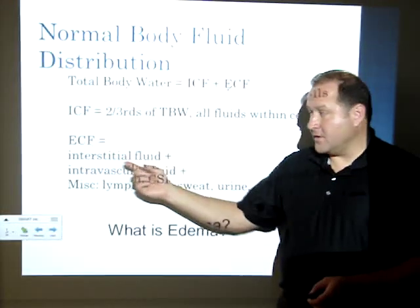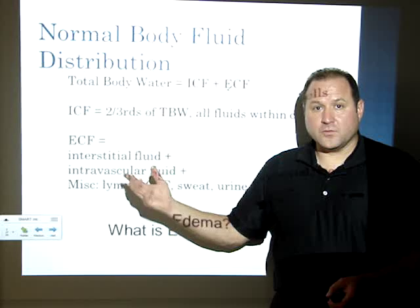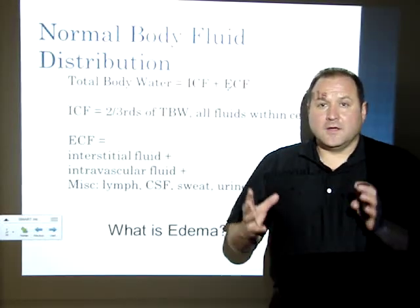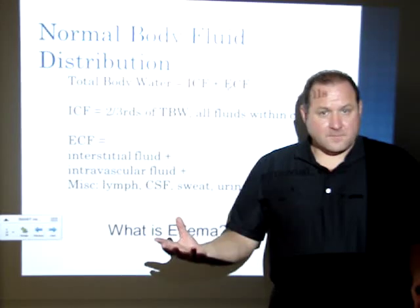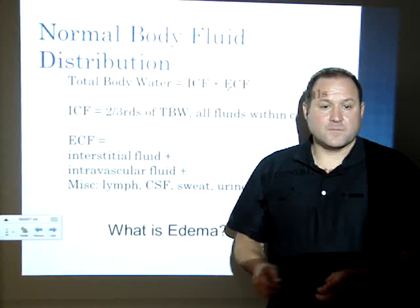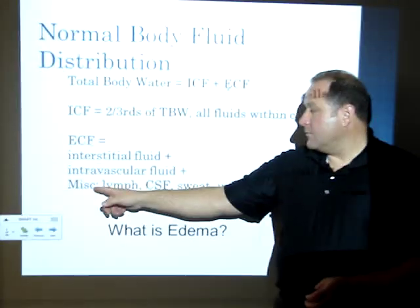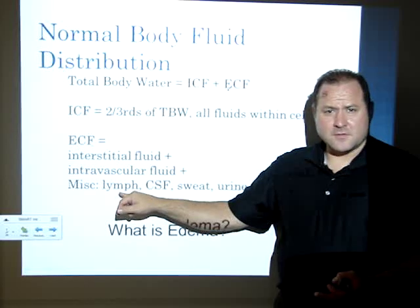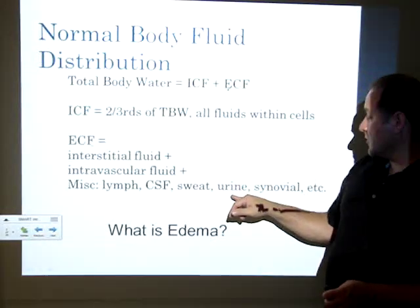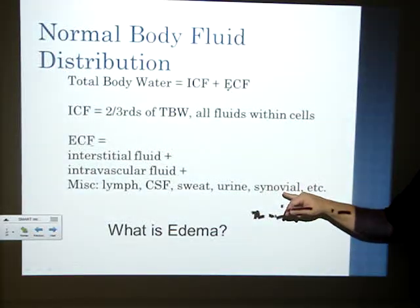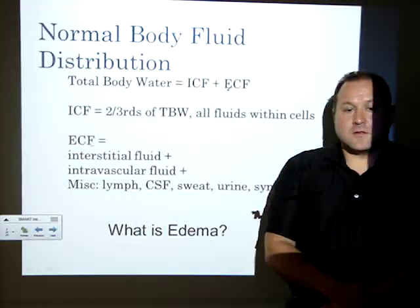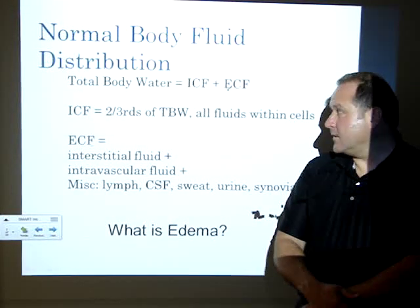Your extracellular fluid consists of everything else. We have interstitial fluid — the fluid in between the cells. We have intravascular fluid, which is fluid inside your blood system, your bloodstream. And miscellaneous: your lymph system has fluid, cerebrospinal fluid, sweat, urine, synovial fluid inside your joints, and that sort of thing.